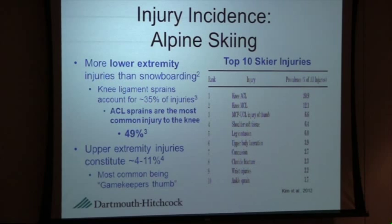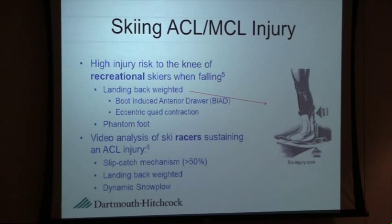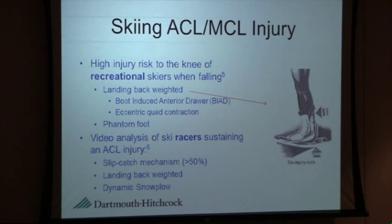The injury risk for ACL in skiers — and also MCL injuries — has been studied in the past. The first study was on recreational skiers and identified two mechanisms. One is landing back-weighted. When a recreational skier is falling and lands back-weighted, there are two effects that create high levels of ACL strain: the boot-induced anterior drawer, and the eccentric quad contraction. When you land on your ski tails, the forces from the boot are transferred through the knee, creating a higher shear force.